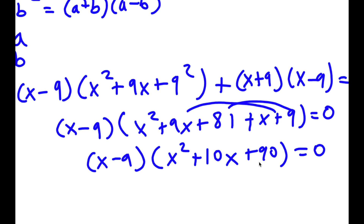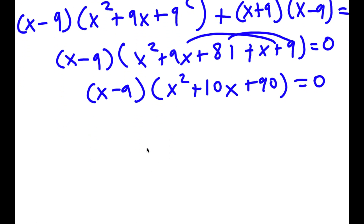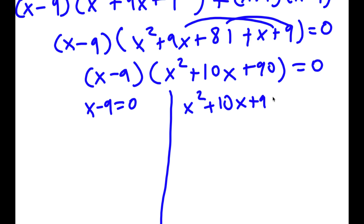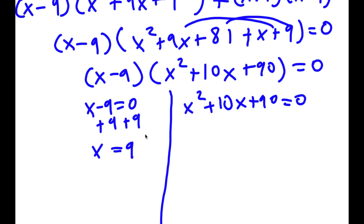This gives me two equations: x minus 9 equals 0, and x squared plus 10x plus 90 equals 0. For x minus 9 equals 0, I add 9 to both sides to get x equals 9. So this is one solution.